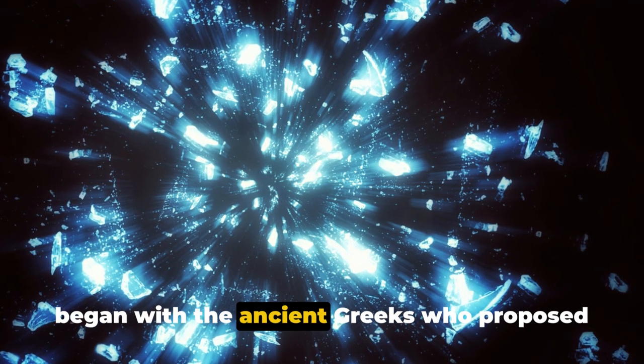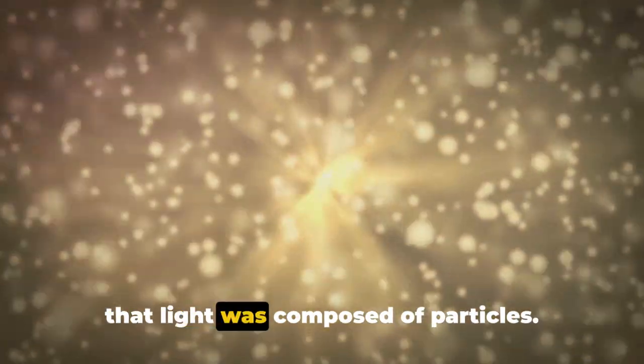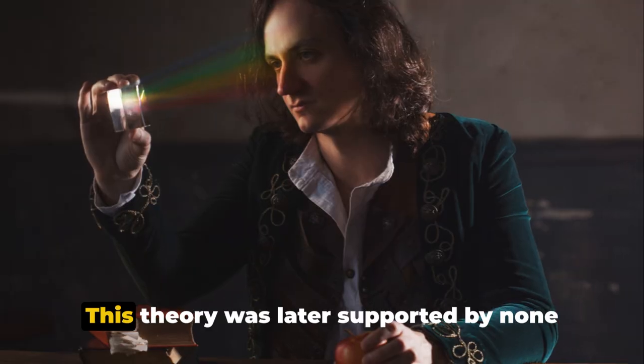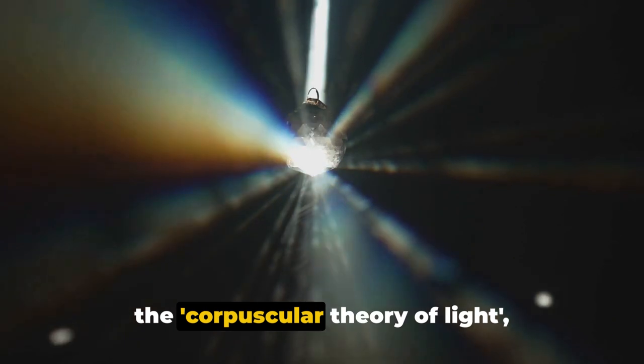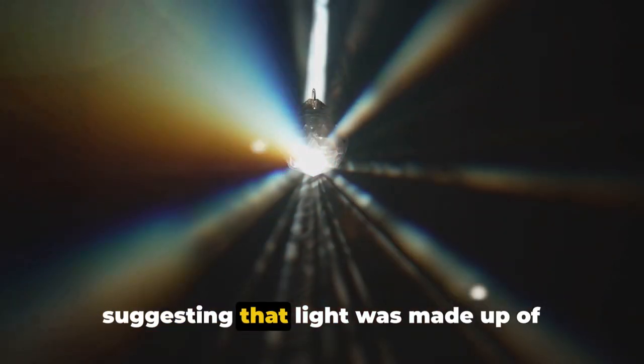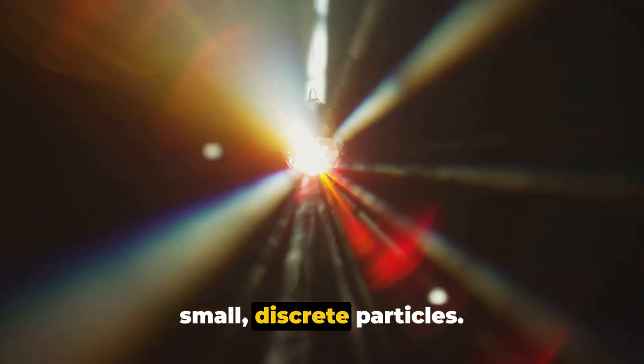The mystery began with the ancient Greeks who proposed that light was composed of particles. This theory was later supported by none other than Sir Isaac Newton who proposed the corpuscular theory of light, suggesting that light was made up of small, discrete particles.